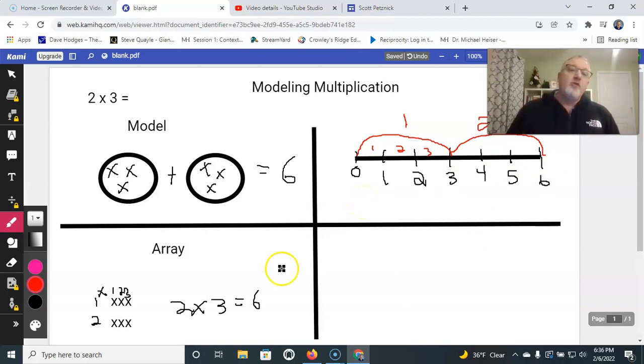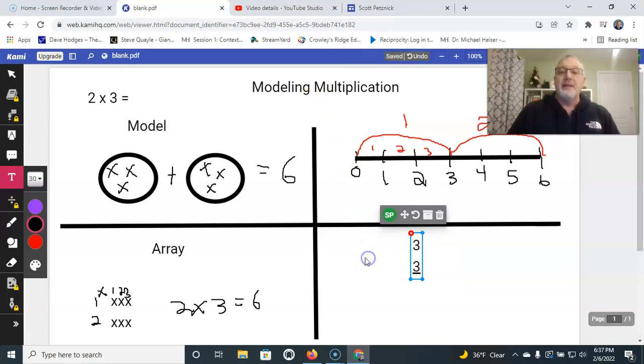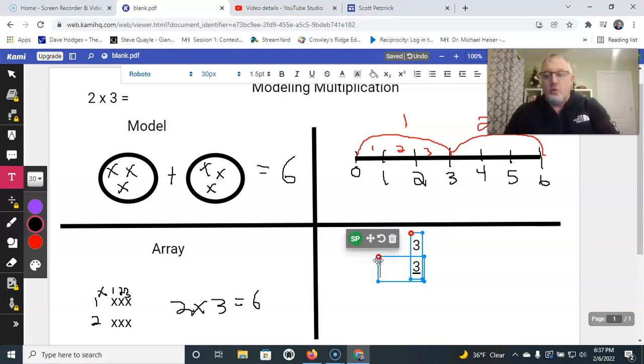Another way of modeling, and we've already talked about another way of doing this, is 2 times 3 means I'm adding 2 threes. And that is my multiplication, my repeated adding, if you want to call it. That's what we're doing there.